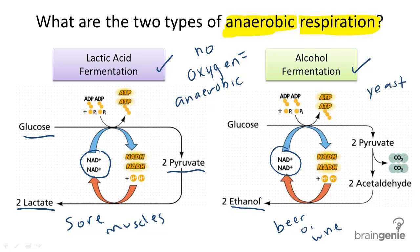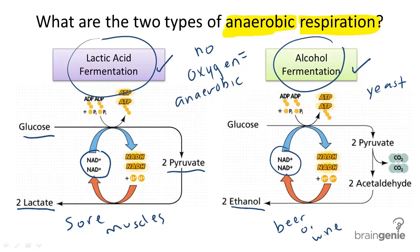If too much of this ethanol builds up, it will eventually kill the organism. So in summary, two types of fermentation — respiration without the availability of oxygen — are lactic acid fermentation and alcohol fermentation.